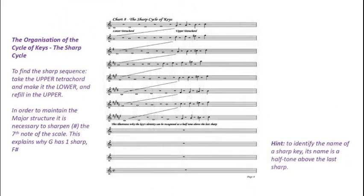Now to find the sharp sequence, you take the upper tetrachord and make it the lower. In order to maintain the major structure, it is necessary to sharpen the 7th note. This is why G has one sharp, F sharp.